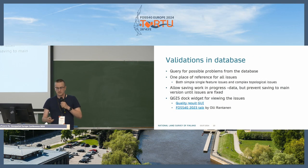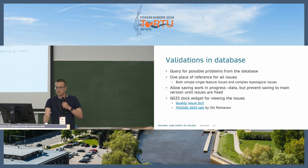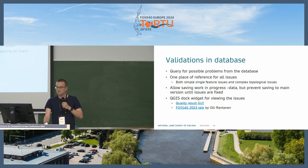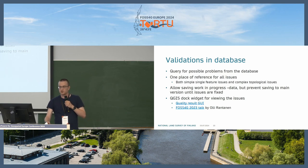When data is edited, we need to validate features in the database. Our approach is to query possible problems from the database features, so we have one place of reference for all issues. We can have both simple attribute-based issues and complex topological issues listed, so there is only one tool for all clients — it's not client-dependent. For example, instead of using the QGIS topological validation tool to check for geometry self-intersections, we also check those with our built tool.